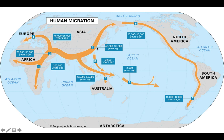Steps eight and nine show that they colonized different islands throughout the Pacific Ocean — 3,500 years ago and then 2,500 years ago.